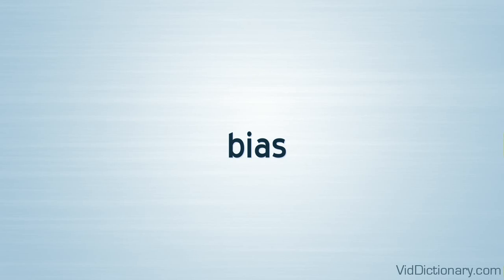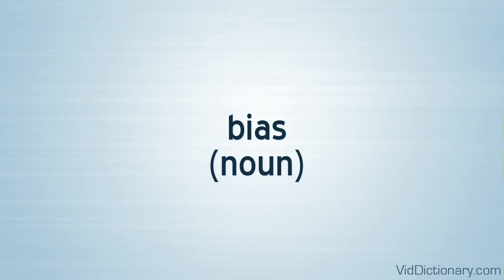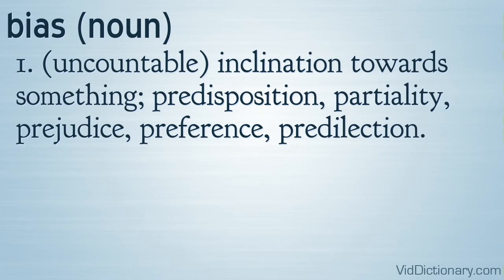Bias. Part of Speech: Noun. Five Definitions. Definition 1. Uncountable: inclination towards something, predisposition, partiality, prejudice, preference, predilection.